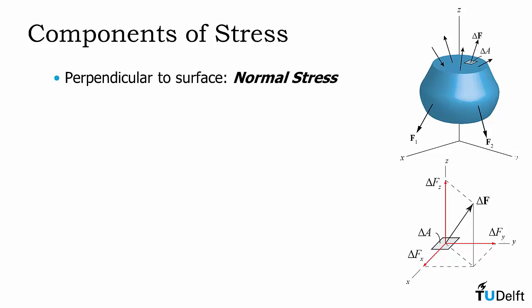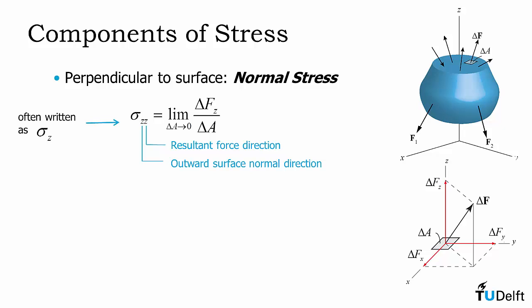If we look perpendicular to the surface, we can define a normal stress, and that normal stress is the limit of the resultant component of force, delta Fz, divided by the area, delta A, in the limit as delta A approaches zero. We will call this stress sigma_zz. The first subscript in this labeling refers to the outward surface normal direction. So the normal vector for our surface delta A points in the z direction. The second subscript refers to the resultant force direction. So delta Fz is also in the z direction. Now for a normal stress, the resultant force direction and the outward surface normal direction will always be the same. So we often write this as just sigma_z.